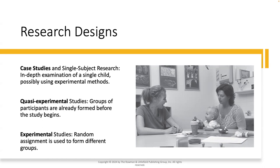Quasi-experimental studies involve groups of participants that are already formed before the study begins — for example, infants born preterm or in a multiple birth, be that twins or triplets. Experimental studies use random assignment to form different groups — for example, infants who are randomly assigned to play with familiar toys compared with infants who are randomly assigned to interact with unfamiliar toys.